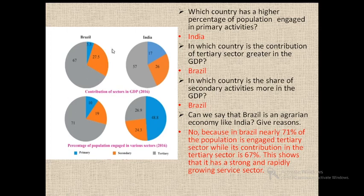In Brazil's GDP pie chart, only 5.5% of contribution is from primary activities, 27.5% from secondary sectors, and 67% from tertiary sectors. Whereas for India, the tertiary sector contributes 57%, secondary sector contributes 26%, and primary sector contributes 17%.